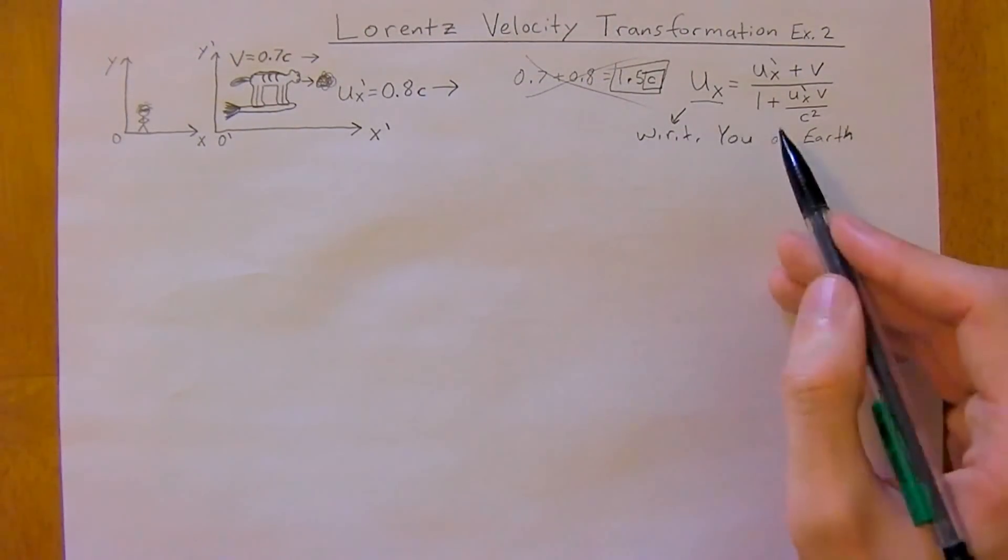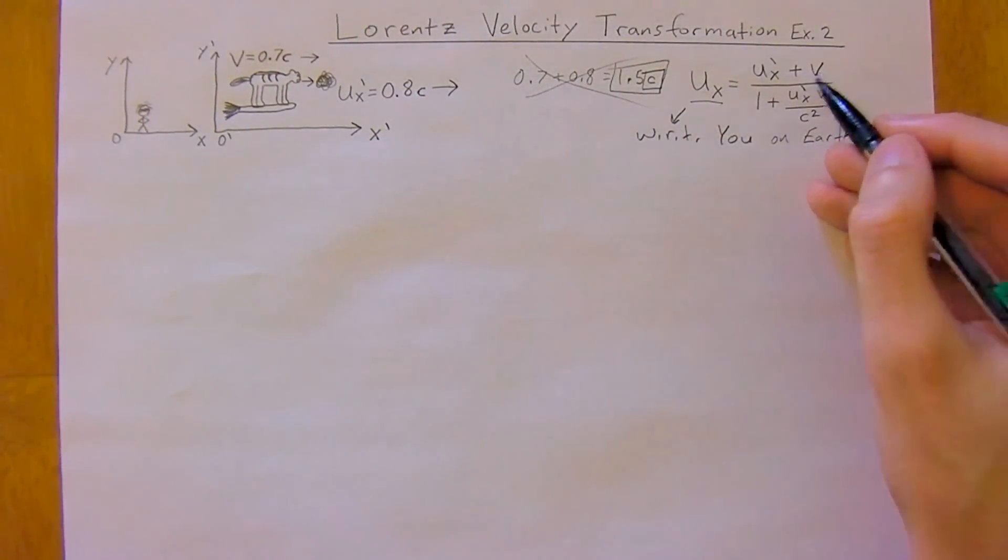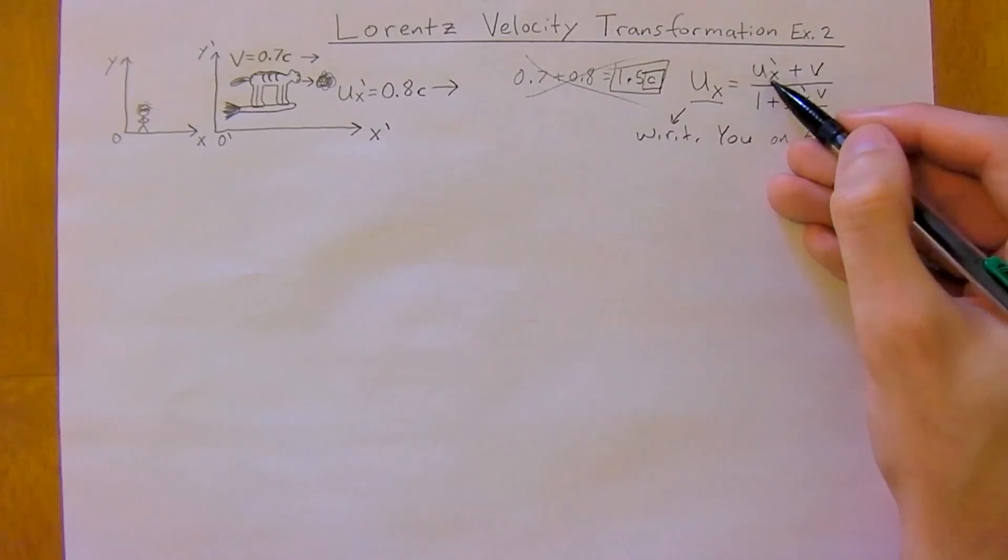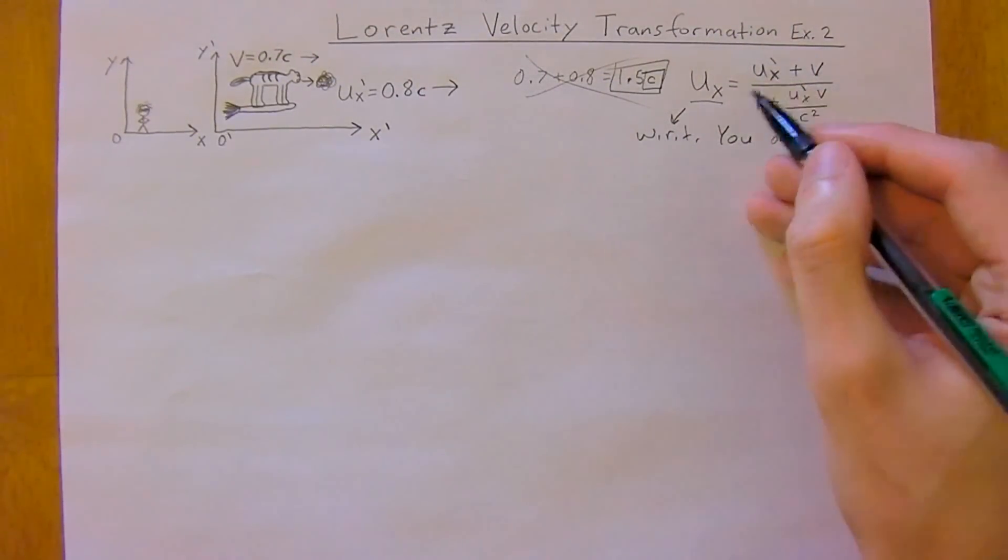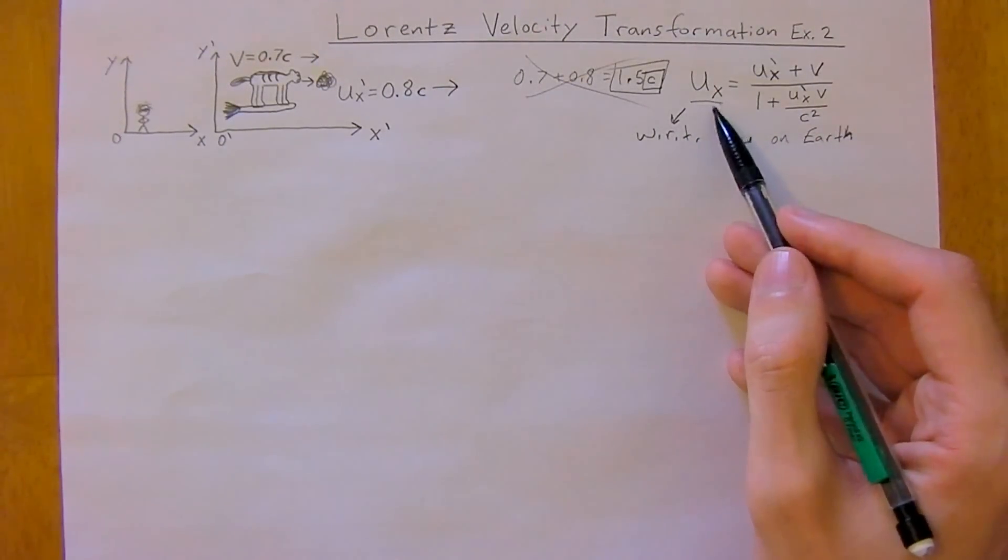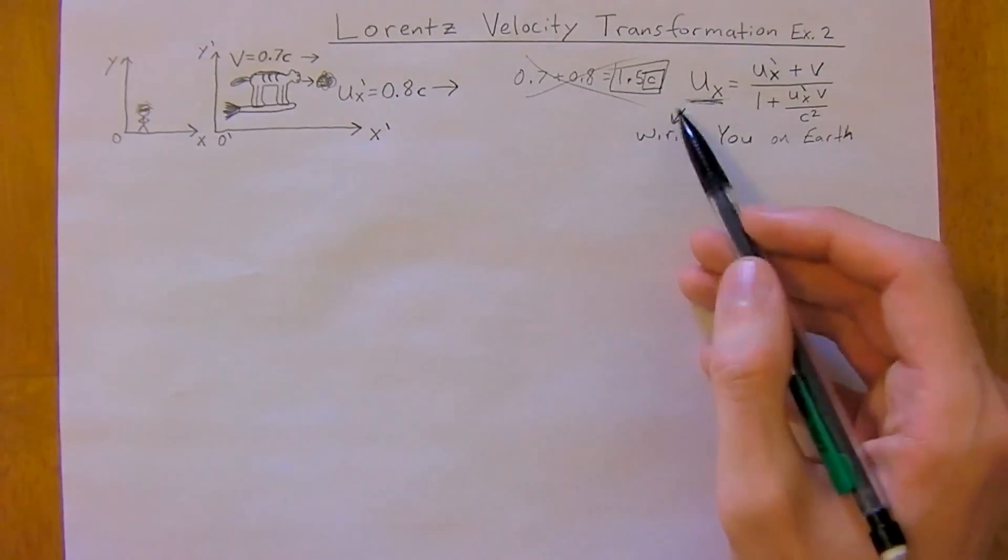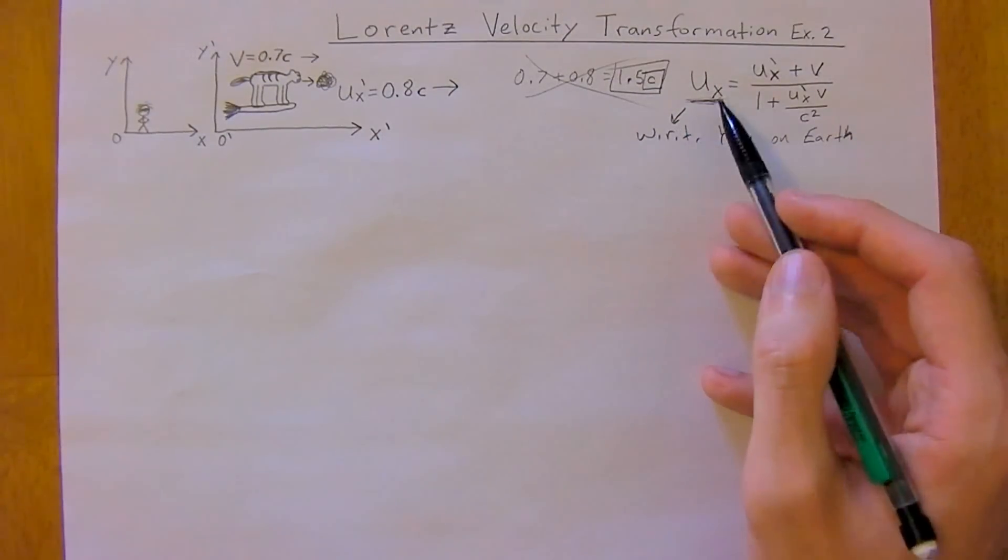So we would use this equation and in this equation we would have the velocity which you observe from Earth of the cat on the broomstick which is 0.7c, and we would have the velocity with respect to the cat that the cat sees of its extreme hairball that it coughed up. And then we would have the velocity which you would see with respect to u of the hairball. So obviously the hairball is not traveling at one and a half times the speed of light so we need to figure out what speed you would be able to see that at.